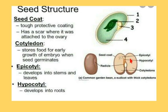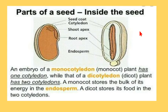The dicot seed has two cotyledons which provide food for the growing embryo. You can see here the inside of a dicot seed — this is the embryo. The embryo has two portions: the upper one called epicotyl and the lower one called hypocotyl. Epicotyl develops into stems and leaves, whereas hypocotyl develops into roots.